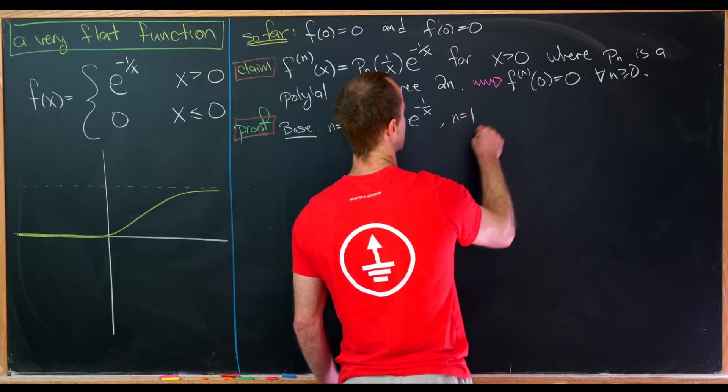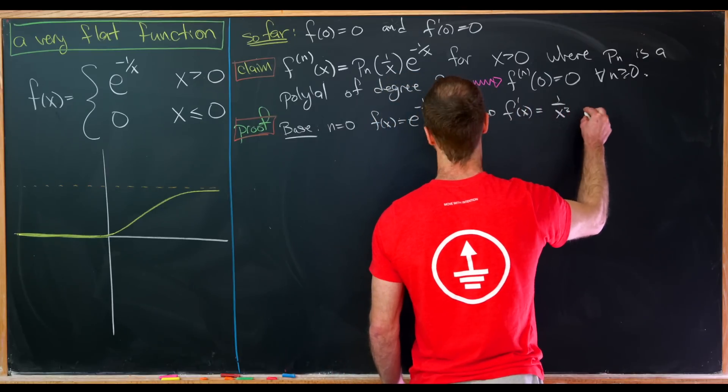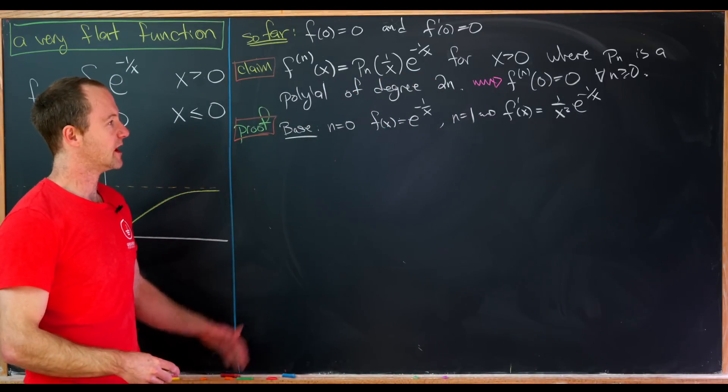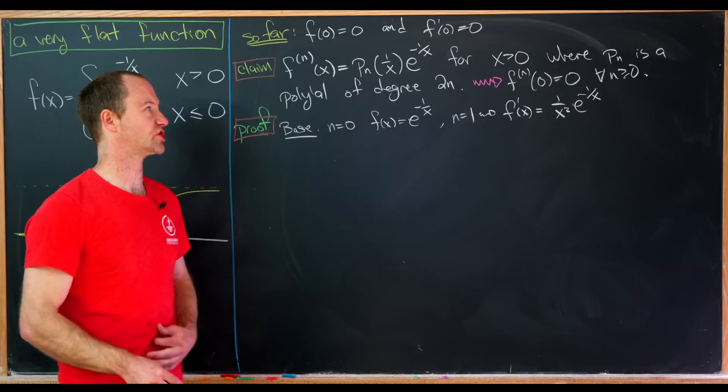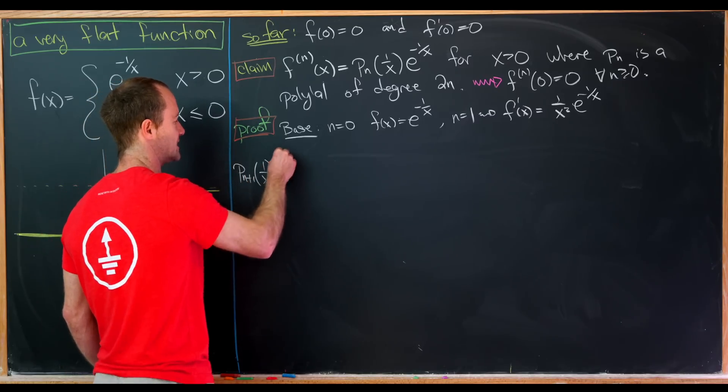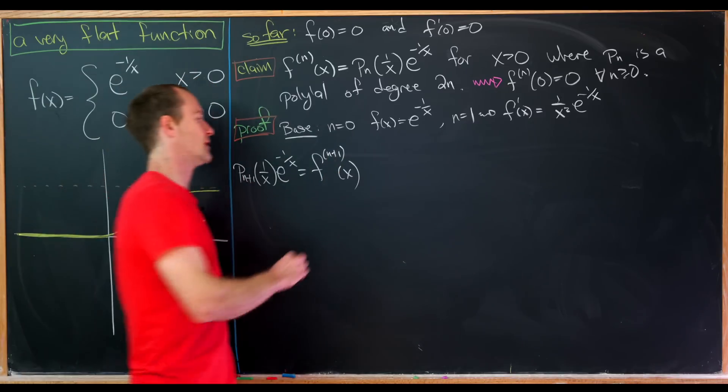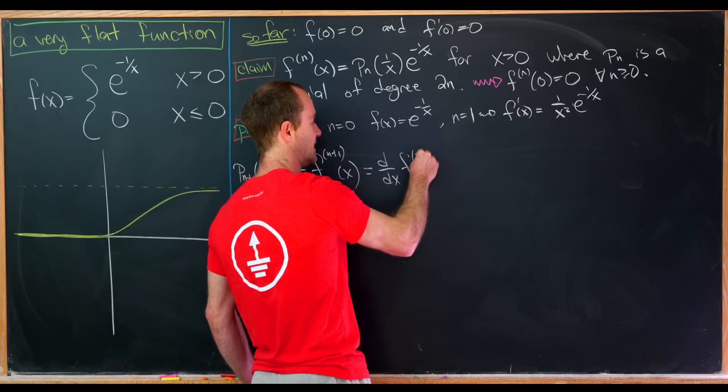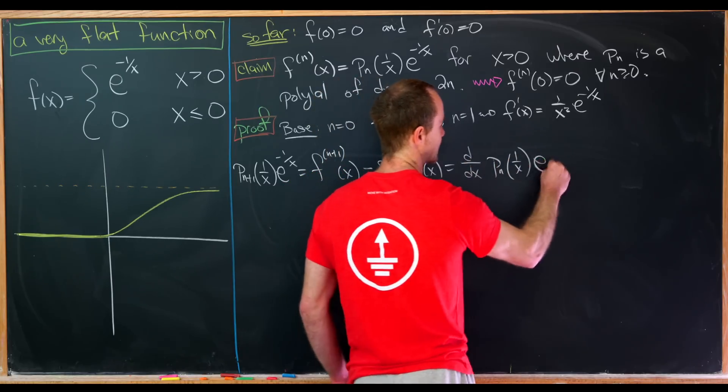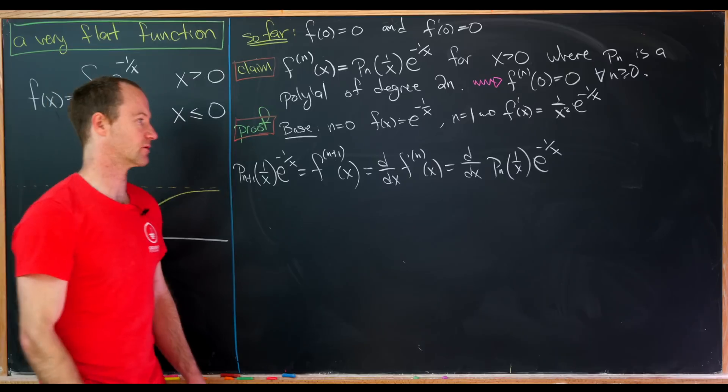And then let's look at the n equals 1 case, which we already explored. We had f prime of x is 1 over x squared, e to the minus 1 over x. Again, that's a polynomial of degree 2 times 1. And now what we'll do is find a recursion on these polynomials p sub n. So let's notice that p sub n plus 1 of 1 over x times e to the minus 1 over x, that's equal to the n plus 1 derivative of f. But the n plus 1 derivative is the derivative of the nth derivative, but the derivative of the nth derivative is the derivative of p sub n 1 over x e to the minus 1 over x.